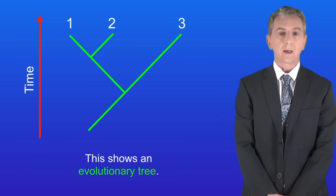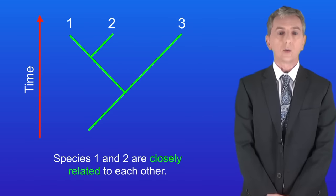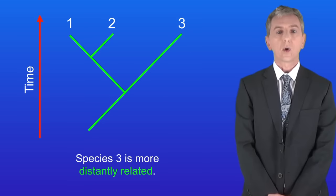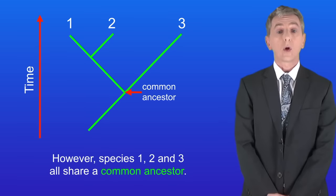I'm showing you an evolutionary tree here. Species one and two are closely related to each other whereas species three is more distantly related. However species one, two and three all share a common ancestor.